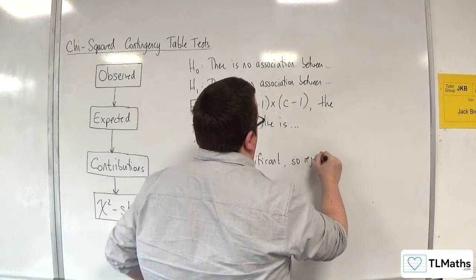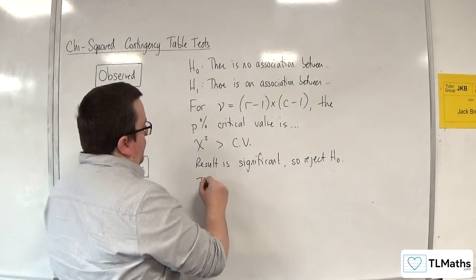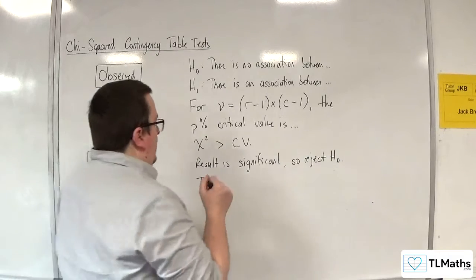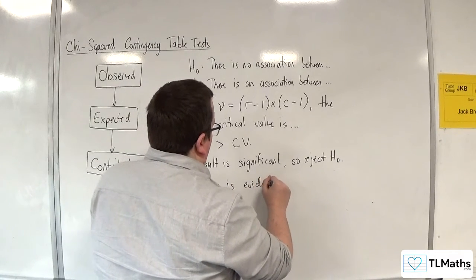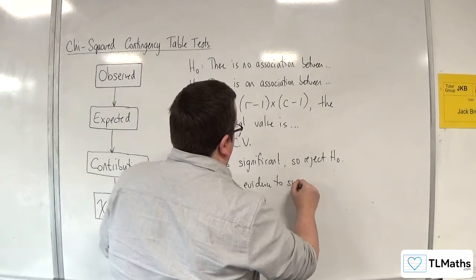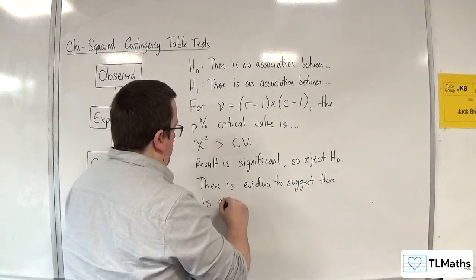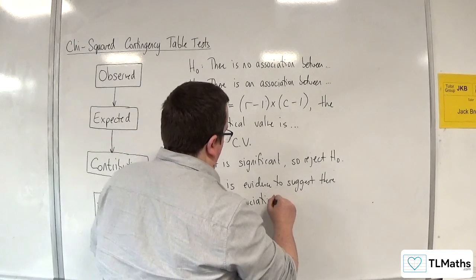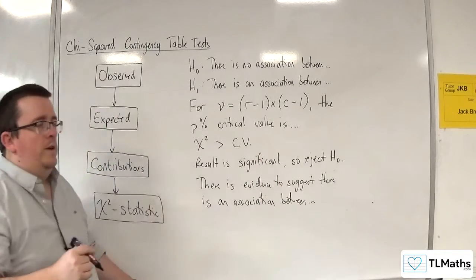So, reject H0. And then, we write a conclusion that is non-committal and in context: there is evidence to suggest there is an association between X and Y in context.